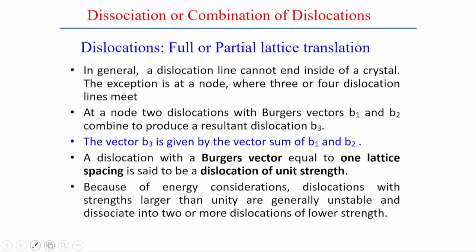Because of energy considerations, dislocations with strength larger than unity are generally unstable. They will dissociate into two or more dislocations of relatively lower magnitude. We will look into what the energy level is when there is a dislocation reaction involving association or dissociation.